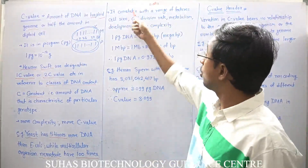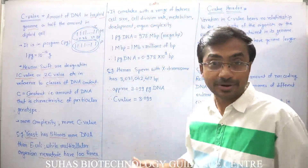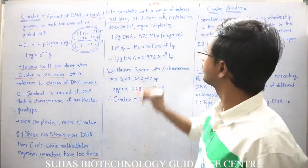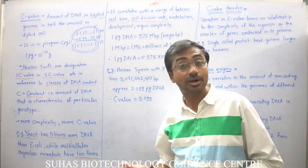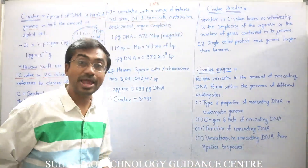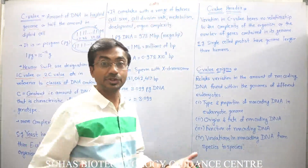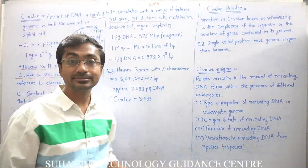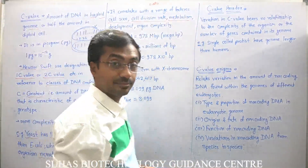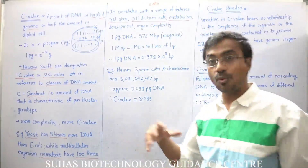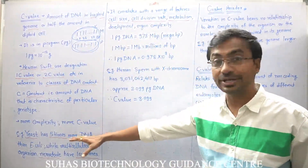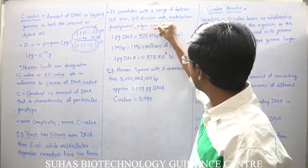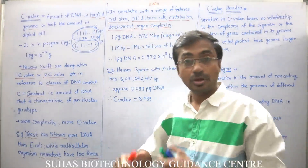C value correlates with a range of features. As complexity increases, C value increases. Cell size — yeast's cell size is bigger than E. coli's. Cell division rate — E. coli replicates faster than yeast cells through binary fission, because its complexity is less. Metabolism — metabolic rate, metabolic reactions, and metabolic processes will vary with genome content and C value. Development, organ complexity, and higher animals also follow this pattern.